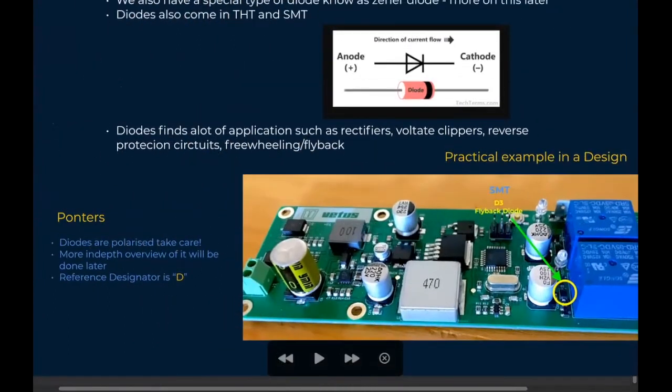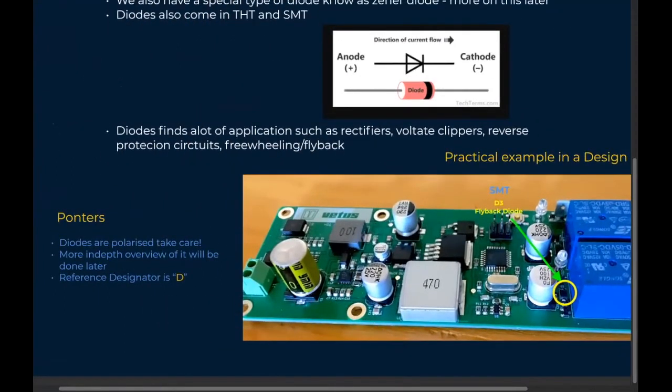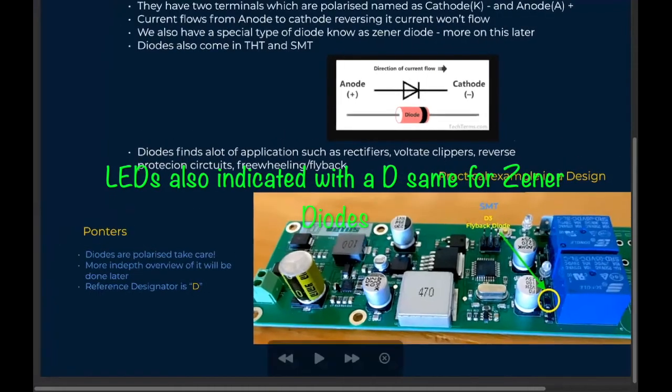Some few pointers again on the diodes. The diodes are always polarized, so do take care in terms of positive or negative. The reference designator of diodes you will see on both should be D, and this D might be a diode or might be a light emitting diode like an LED. So both of them are diodes.